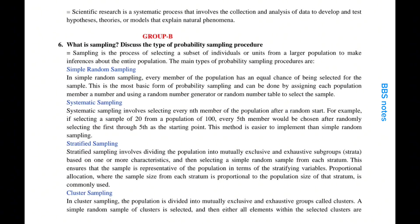Stratified sampling involves dividing the population into mutually exclusive and exhaustive subgroups called strata, based on one or more characteristics, and then selecting a simple random sample from each stratum. This ensures that the sample is representative of the population in terms of the stratifying variables. Proportional allocation, where the sample size from each stratum is proportional to the population size of that stratum, is commonly used.